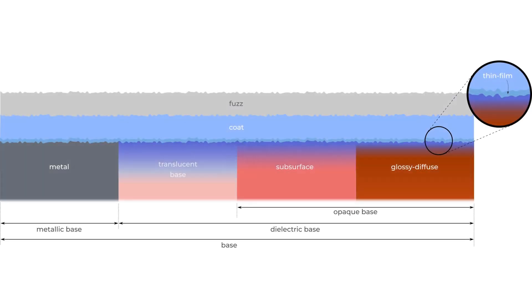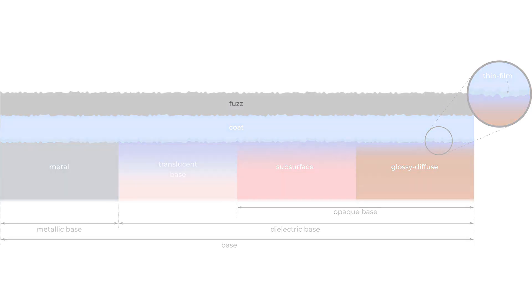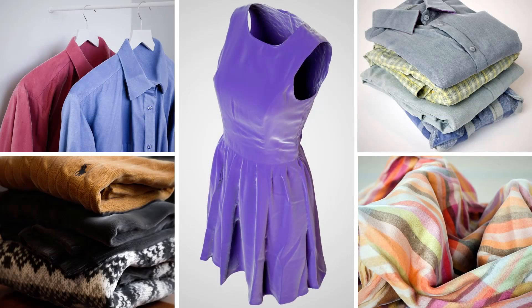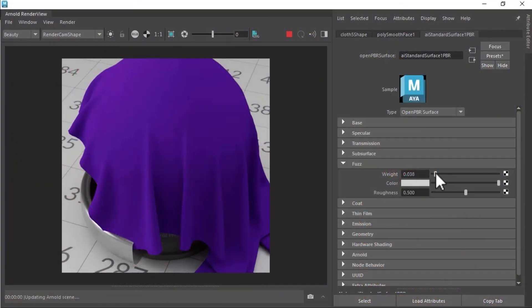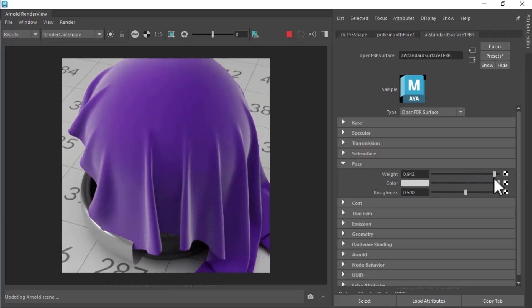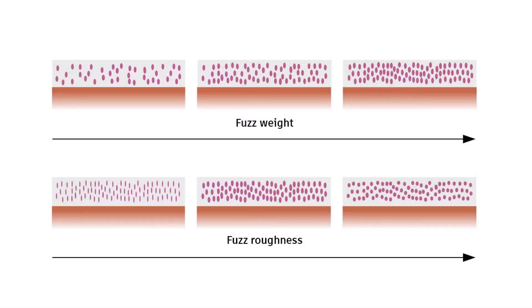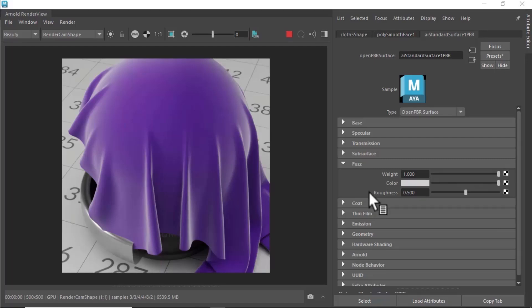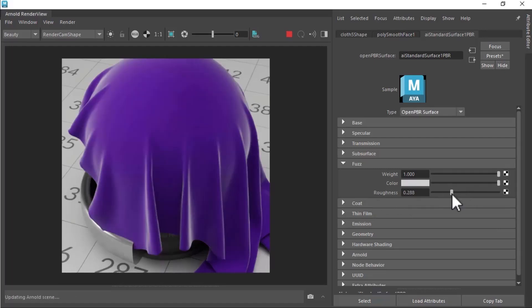On the very top of the material, you can add an optional layer of fuzz. This is mostly used for the appearance of objects with a layer of microscopic fibers, such as for textiles or peach fuzz. The highlight is mostly around the silhouette. The fuzz weight controls the density of the fibers, and the fuzz roughness controls the shape of the fibers. At high roughness, the fuzz fibers approach a more spherical shape, which produces a more dusty look.